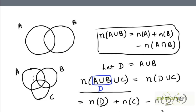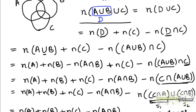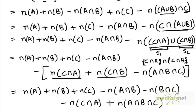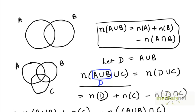Let's now try to use a second method to derive the same formula. We'll focus on the Venn diagram. We want to derive an expression for the number of elements in A union B union C, which is the number of elements in at least one of these three sets — the elements lying within the bounded region enveloping the three sets. For convenience, let me mark the regions in this Venn diagram.